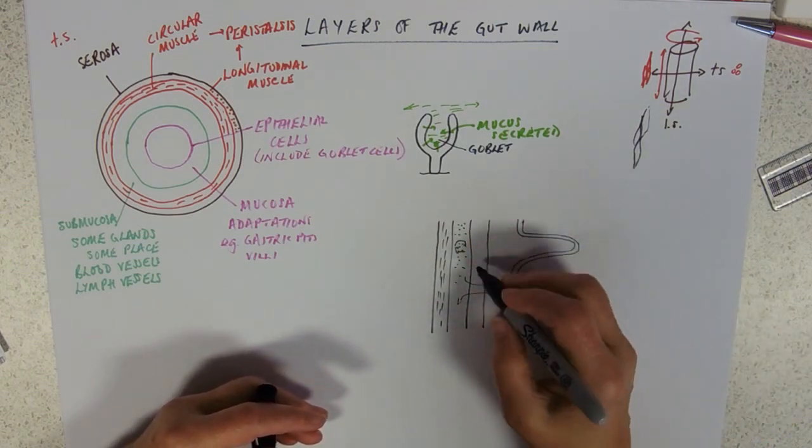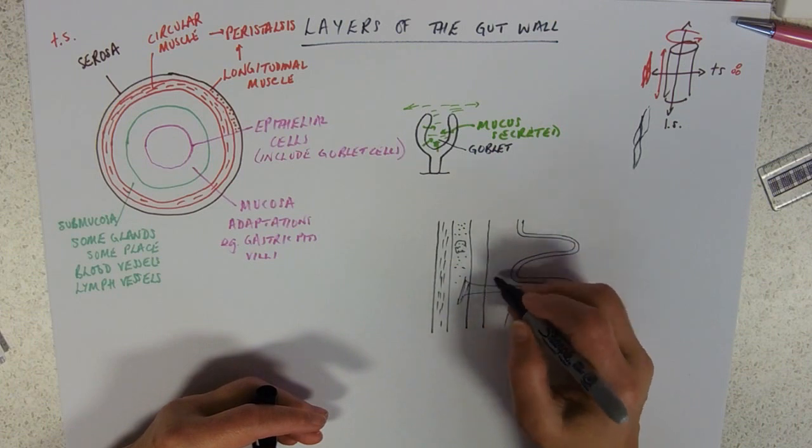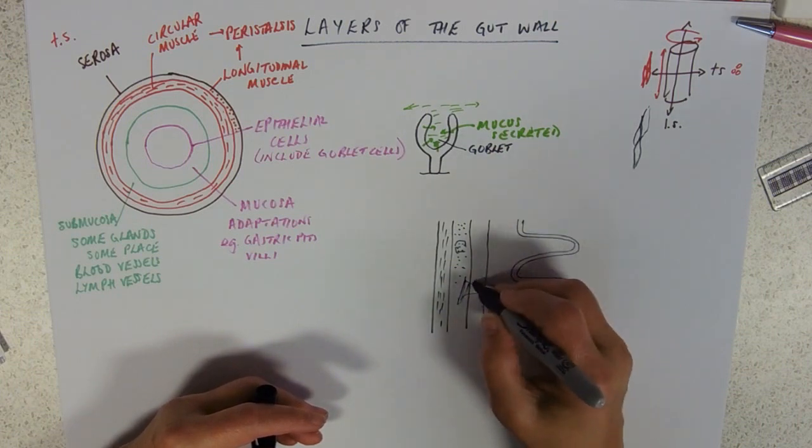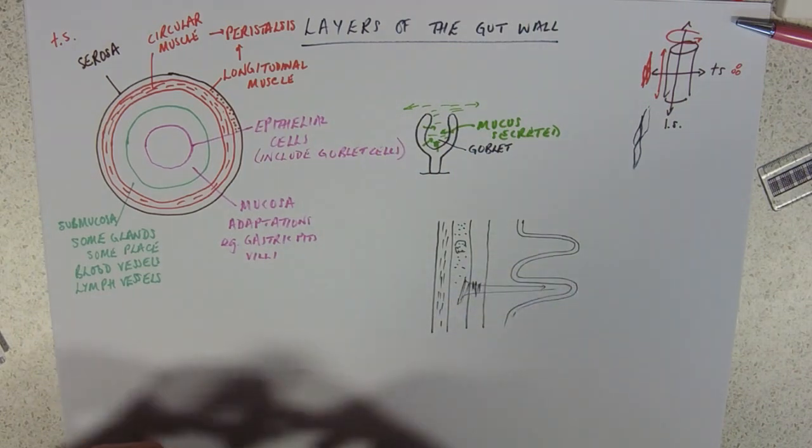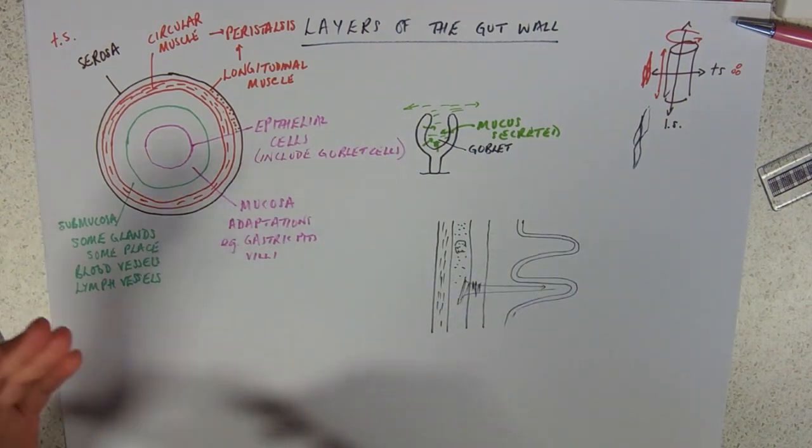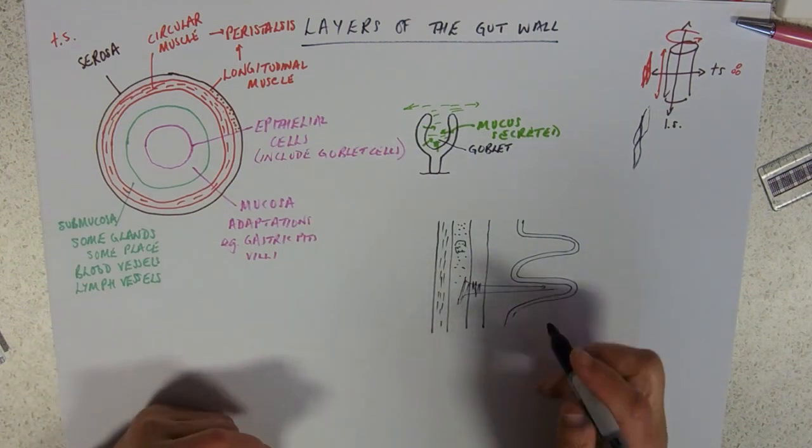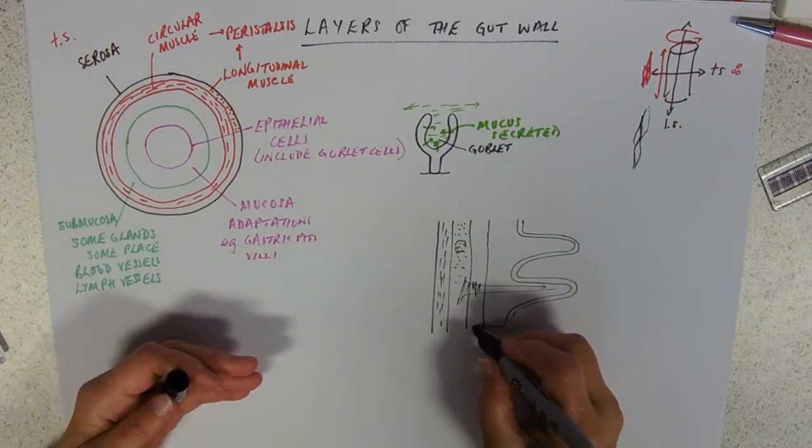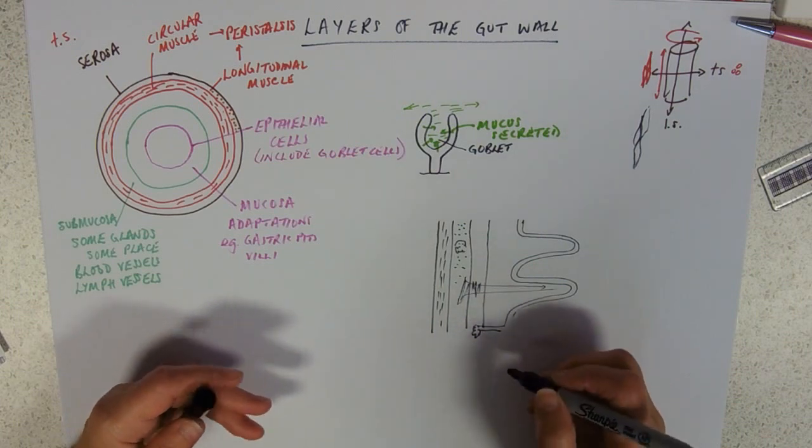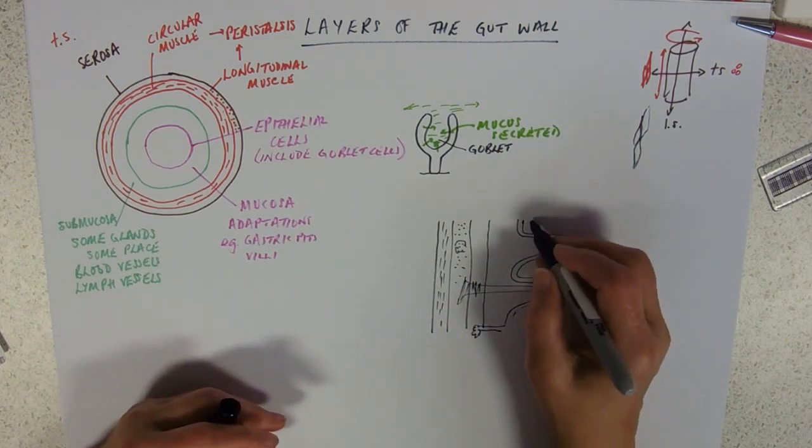They're coming in from the submucosa. Sorry, I've gone a bit deep there and I've gone into the muscle layer, so they're coming out of this region here. You get submucosal glands, so if it's the duodenum you'll have a Brunner's gland there, and you have mucosal glands as well.